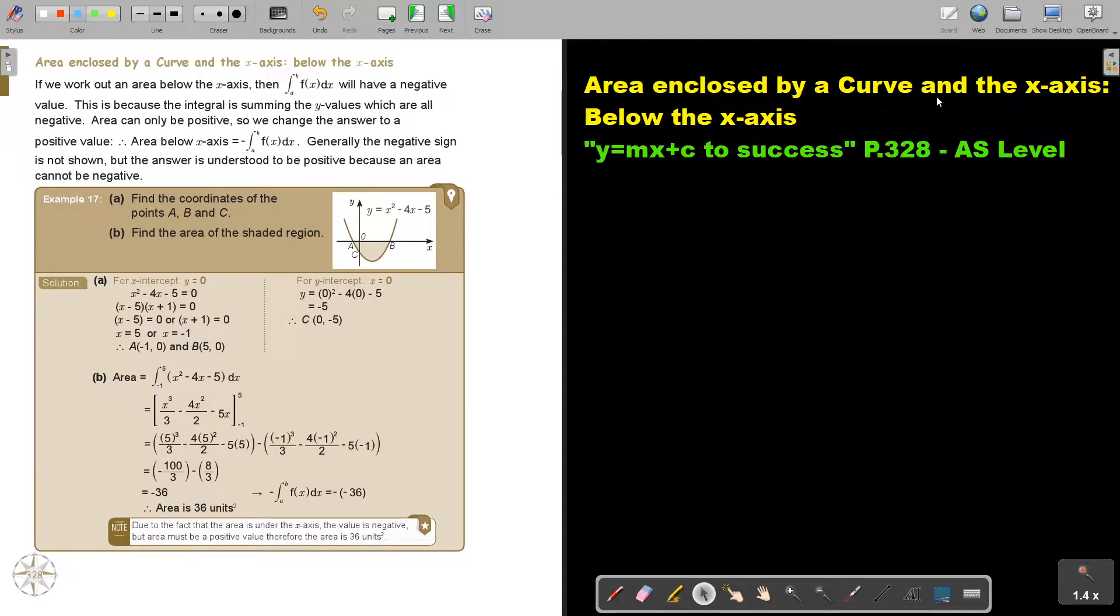Area enclosed by a curve and the x-axis. In this video we will focus on below the x-axis. You will find this on page 328 in the Namibia AS level mathematics textbook Y equals MX plus C to success.